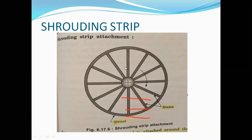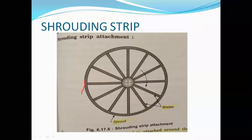The last topic is the shrouding strip attachment. A shroud is attached around the periphery of the blade tips in order to stiffen the blades and prevent spillage of water over the tips. So the shrouding serves two purposes: it prevents water from passing over the tips, and it provides stiffness to the blade.